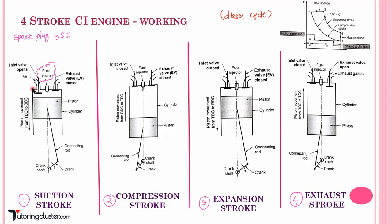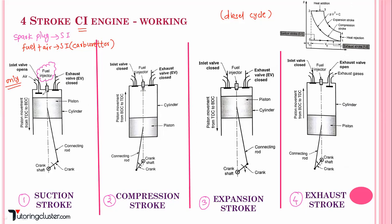During the suction stroke, the inlet valve is open and the exhaust valve is closed. The piston is moving from top dead center to bottom dead center, thereby decreasing the pressure inside the cylinder below atmospheric pressure. That is why air from the atmosphere rushes inside the cylinder. In case of a CI engine, only air comes inside the cylinder.